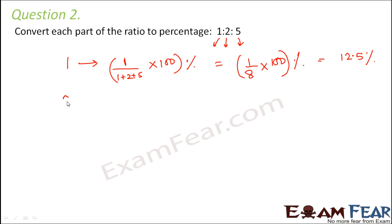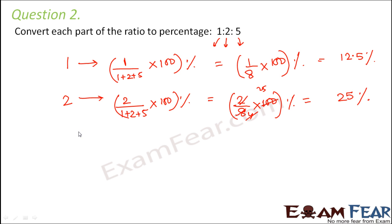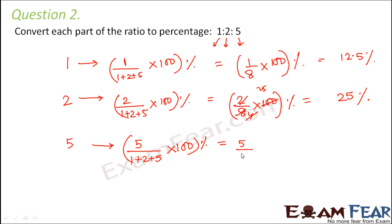Now let us look at the third part which is 5. So 5 divided by the sum of the three parts into 100% gives 5 by 8 into 100, which is 500 by 8, that is 62.5%.